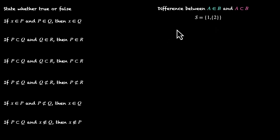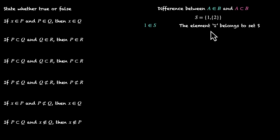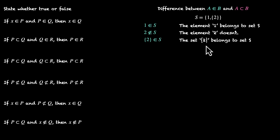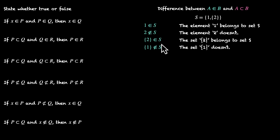Let's write these things down. S has two elements. The first one is 1, so we can say 1 belongs to S. The number 2 does not belong to S — the element 1 is in it, but the element 2 is not. Instead, we have the set that contains 2; so that set belongs to S. And the set that contains 1? That does not belong to S, because we don't have a set that contains 1 inside S.